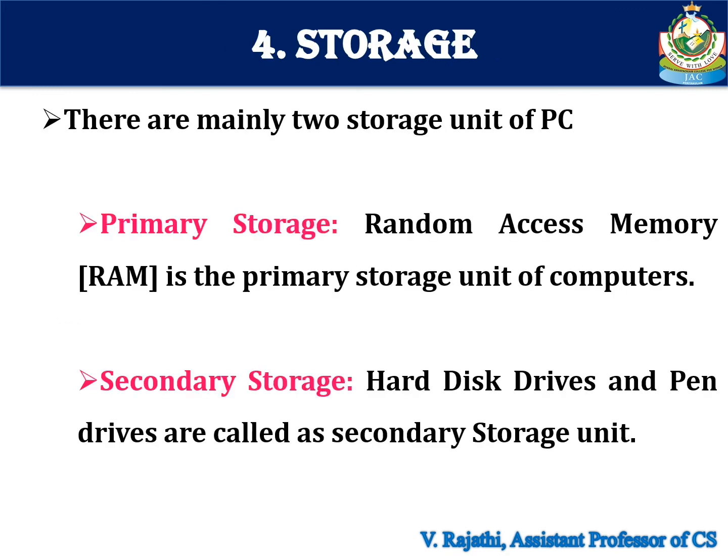The final one is storage. There are mainly two storage units of a PC. The first one is primary storage, for example random access memory. And the second one is secondary storage, for example hard disk drive and pen drive.